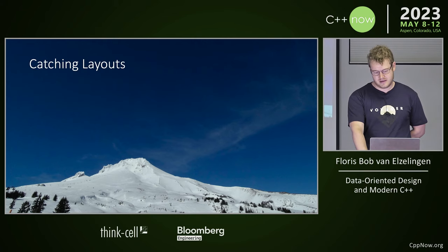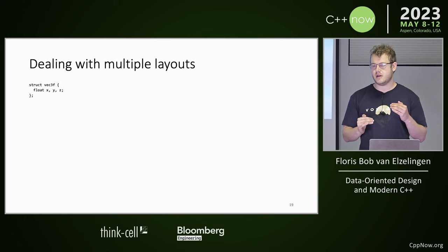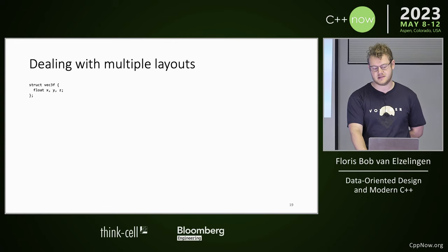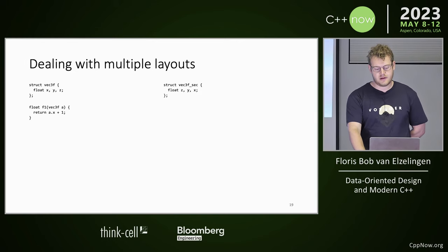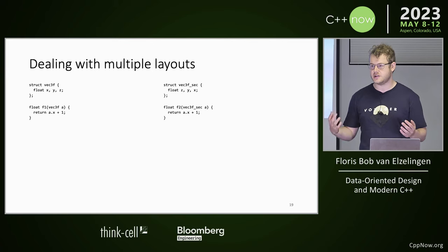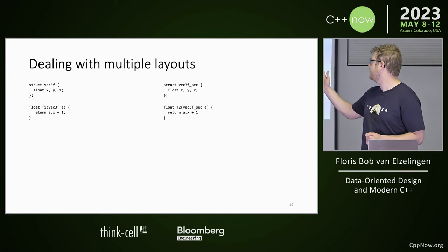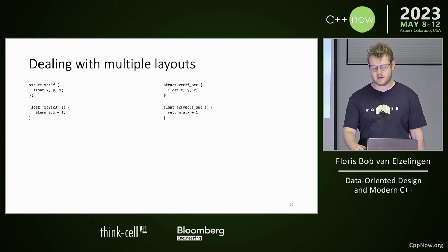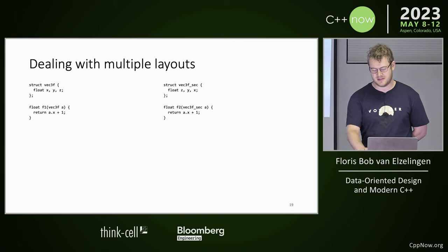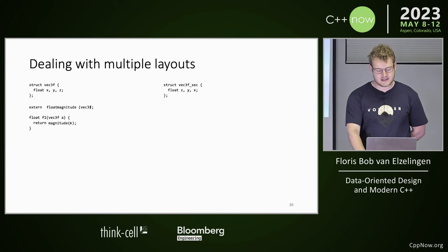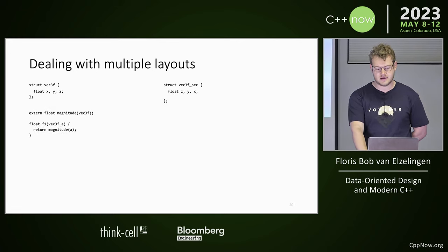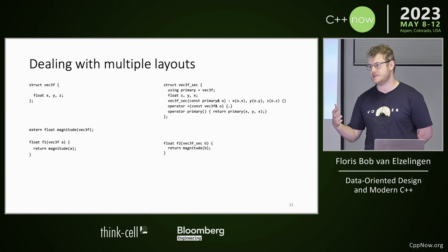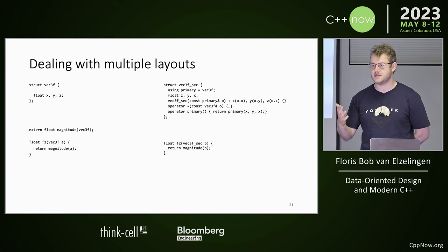So we're going to look at some layouts — multiple layouts that are still one piece of continuous memory — to build up our abstractions. We have this struct here and a free function that uses it. Then we have a second layout — just switch things around, function works. If we were to refactor from Vec3F to the secondary representation, that would just work — user code wouldn't change unless you're doing weird pointer stuff. If we have an external function and can't just use our Vec3F, there is a relatively simple solution: we just write conversions. It works, it might not be efficient, but user code can stay the same.